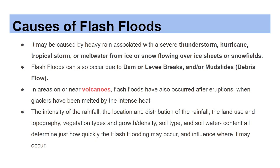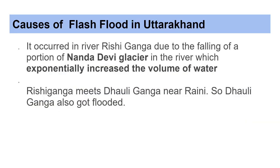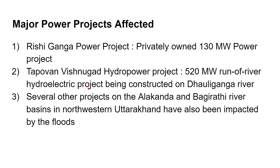The intensity, location and distribution of rainfall, land use and topography, vegetation types, growth and density, soil type, and soil water content all determine how quickly flash flooding may occur and influence where it may occur. In Uttarakhand specifically, flash floods occurred in river Rishi Ganga due to the falling of a portion of Nanda Devi glacier into the river, which exponentially increased the volume of water. Rishi Ganga meets Dhauli Ganga near Raini, so Dhauli Ganga also got flooded.